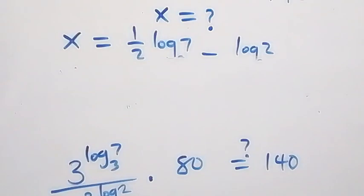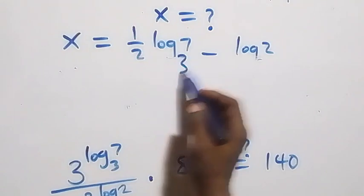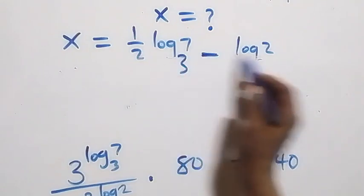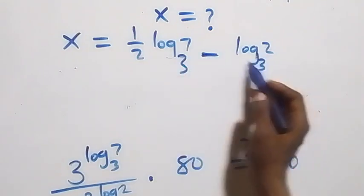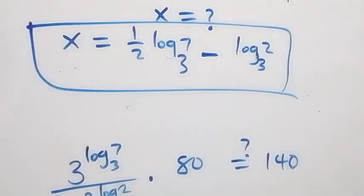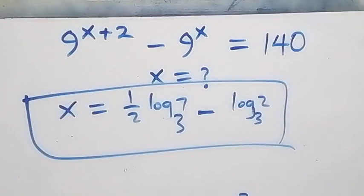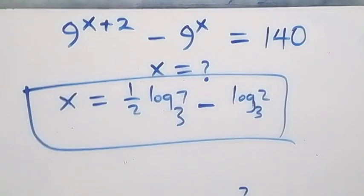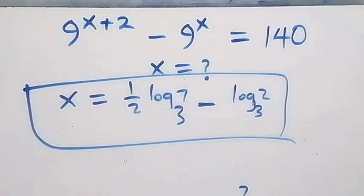We can conclude that x equals half log 7 base 3 minus log 2 base 3 satisfies the given problem. Thank you for watching. Don't forget to subscribe for more videos, turn on the notification bell, share this video, give a thumbs up, put your comments, and see you in the next class. Bye for now.